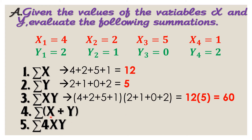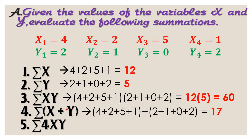Next, summation of x plus y. Therefore, we must add the values of the summation of x and summation of y. In steps 1 and 2, we already got their summation, so all we need to do is to add. So 12 plus 5 that is equal to 17. Lastly, we have the summation of 4xy. All we need to do is to multiply the value of the summation of xy by 4. That is 12 times 5 equals 60 times 4, that is 240.